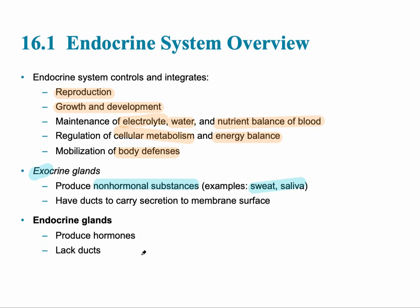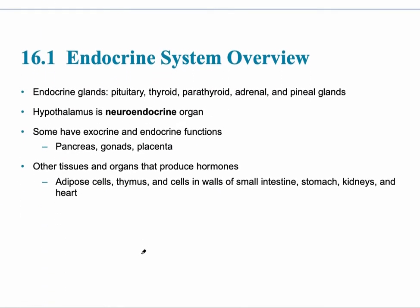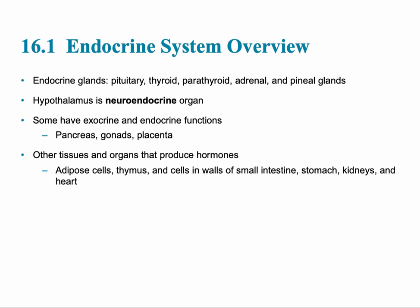Various endocrine glands are present in the body, including the pituitary gland, thyroid gland, parathyroid (located posterior to the thyroid), adrenal gland, and pineal gland. The hypothalamus is a very important neuroendocrine organ because part of it controls the nervous system and part controls the endocrine system. Some glands have both endocrine and exocrine function, such as the placenta, gonads, and pancreas.